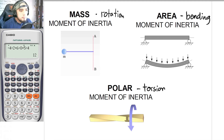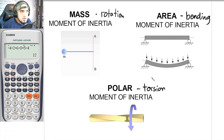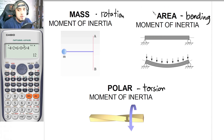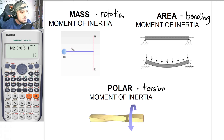In our topic in engineering physics, we will be focusing on mass moment of inertia. Area moment of inertia and polar moment of inertia you will be discussing in your higher years in statics of rigid bodies. A link will be posted in the description box if you want to advance study in area moment of inertia. Mass moment of inertia is once again the resistance to rotation.